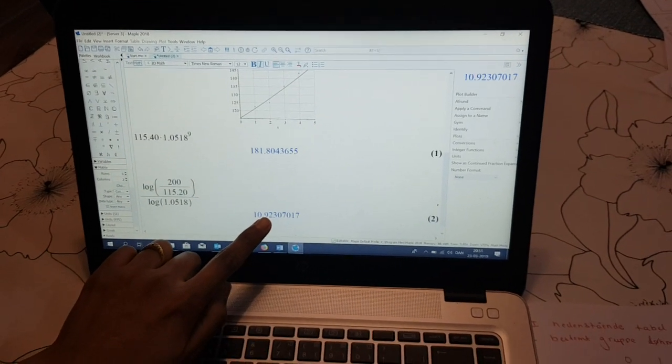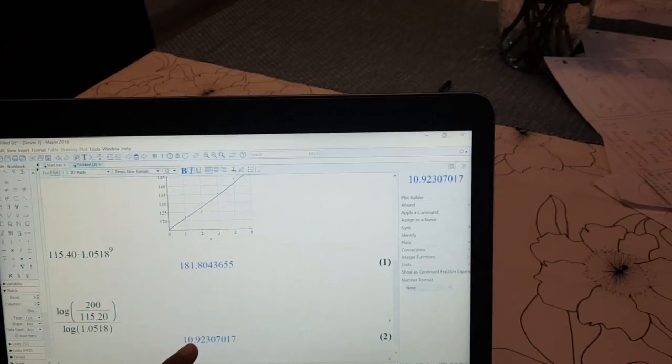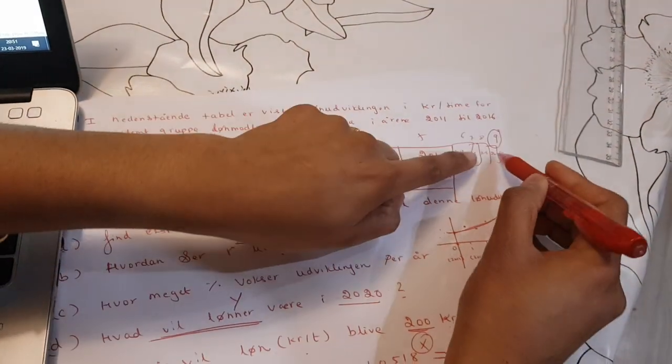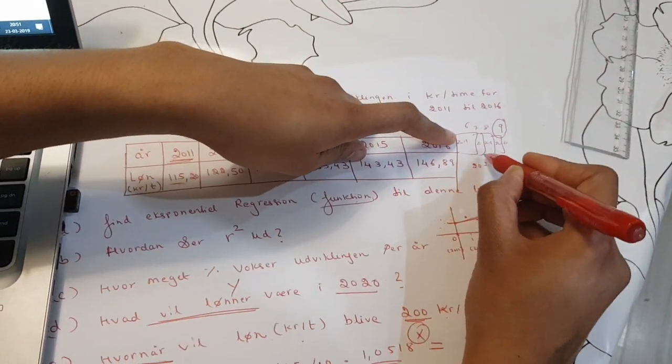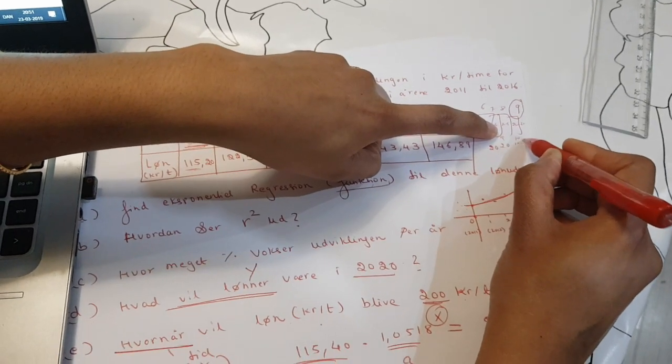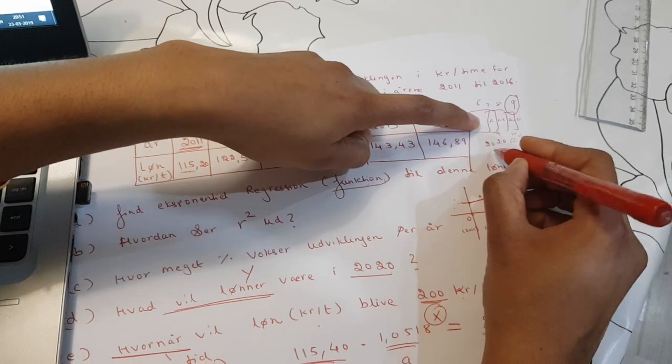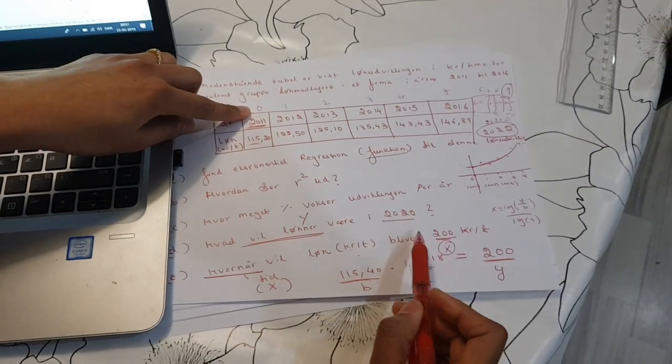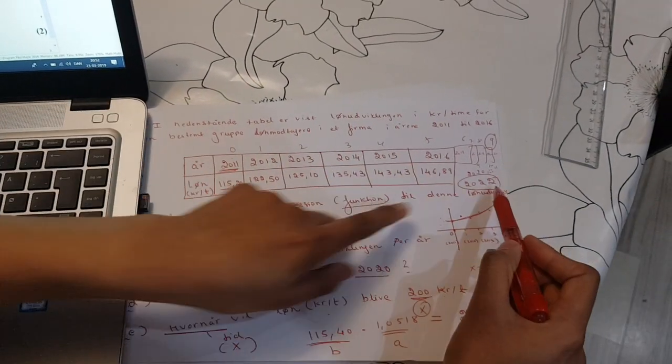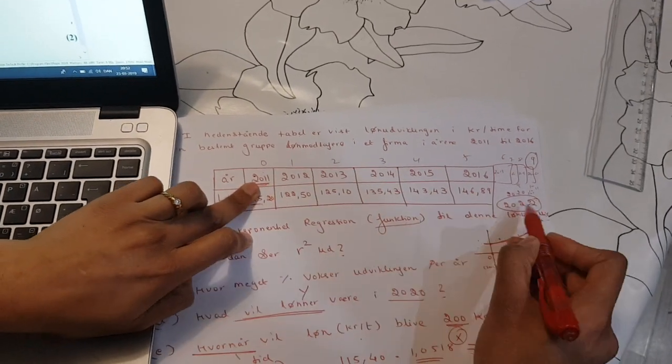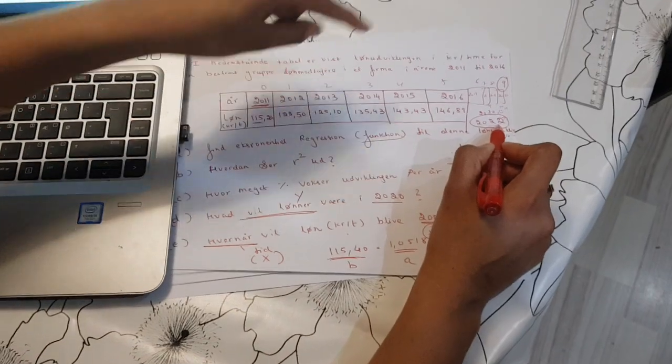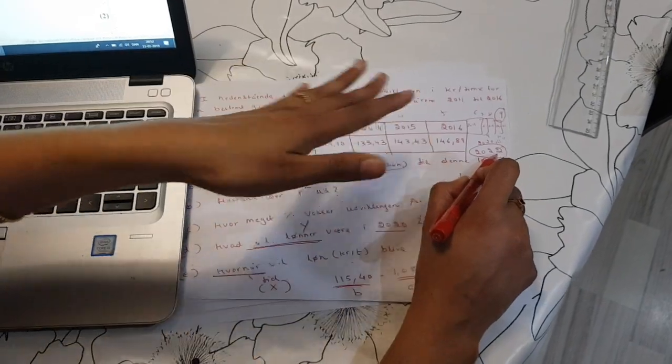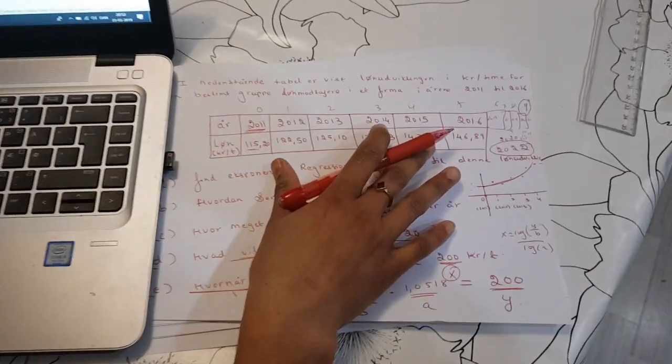Log 200 divided by the start value 115.4, and divide the whole log by 1.051. And I have approximately 11 years. This means, normally you see 11. So we will begin here at 0, then 11 years forward gives us 2022. So in 2022, the value will be 200 kroner per time. Okay? So, I hope you have understood exponential regression. Good.